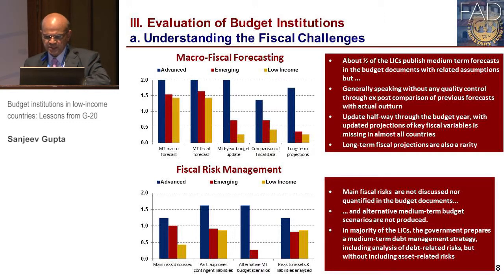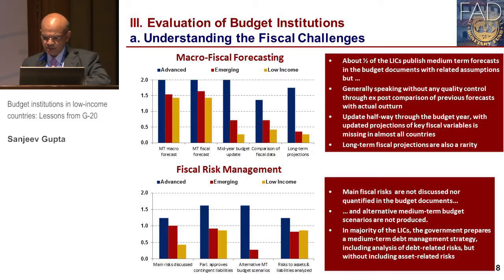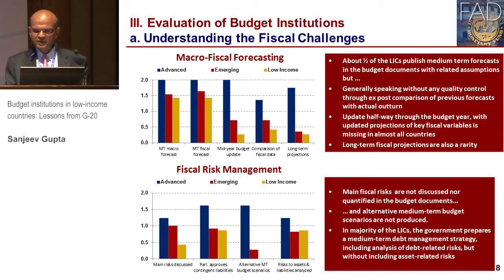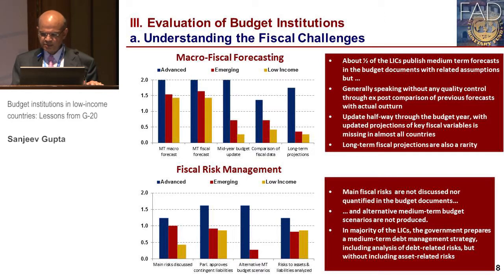Unlike the advanced countries, none of the low-income countries — or for that matter, emerging market countries — make any projections for long-term fiscal challenges that these countries face. As regards fiscal risk management, the main fiscal risks are not discussed or quantified in budget documents, and alternative medium-term budget scenarios are not produced. In the majority of low-income countries, the government prepares a medium-term debt management strategy, but it is not well specified and does not take into account risks arising from the assets included there.